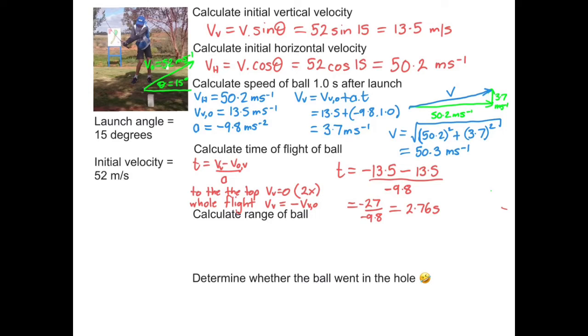Calculating the range of the ball is actually fairly straightforward. As I said before, range is the horizontal displacement, which is equal to the horizontal velocity times by the time of flight. So that's equal to 50.2 times by 2.76, which is equal to 138 metres.